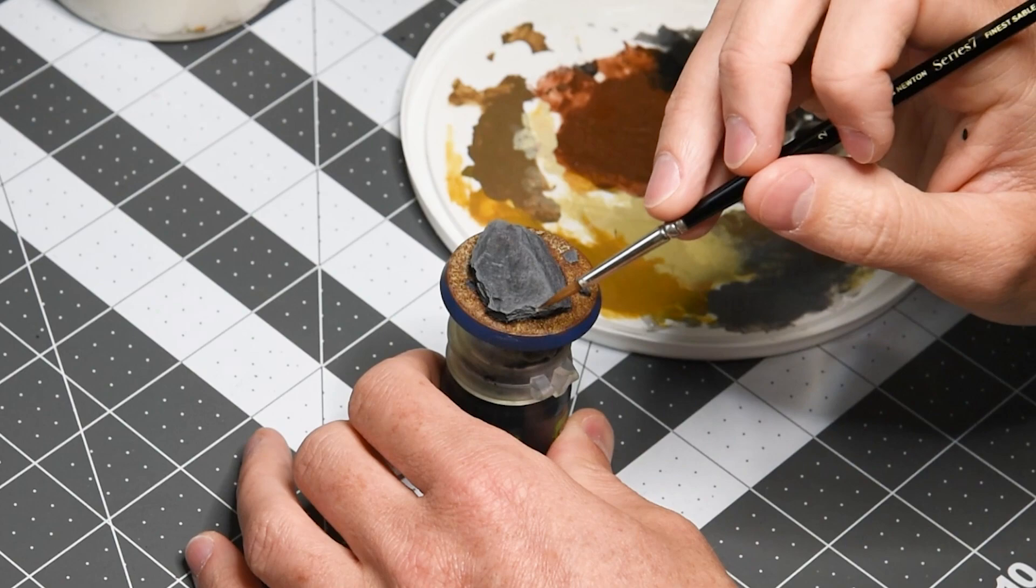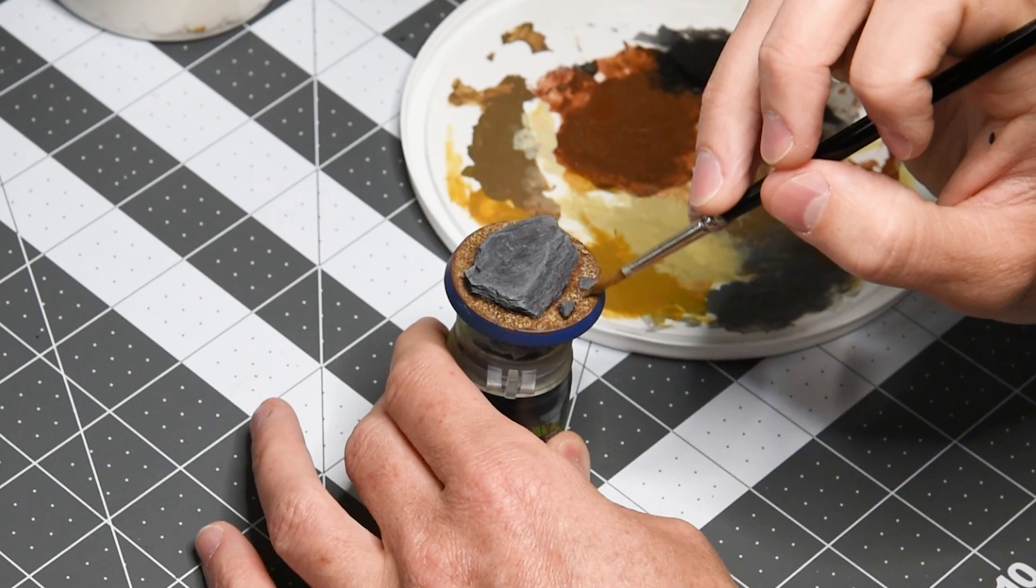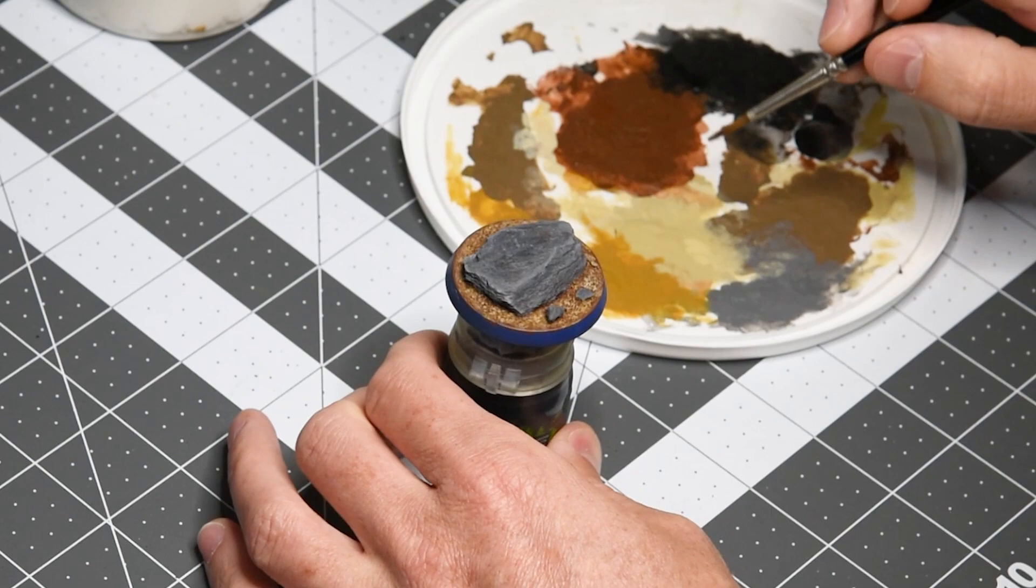And here we're applying our final color to the base, and that's Ushabti Bone. And we're going to use this color to tie in both the sand and the slate rock. And the way we do that first is by over brushing again, trying to cover a little bit less than our previous color.